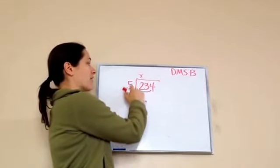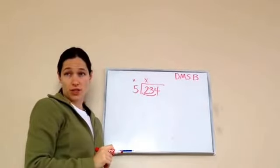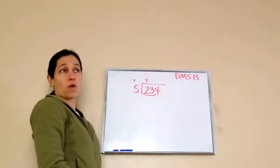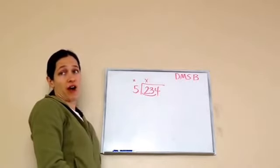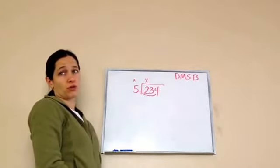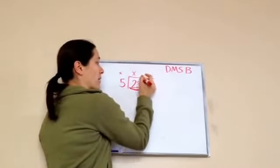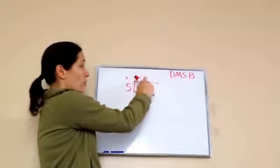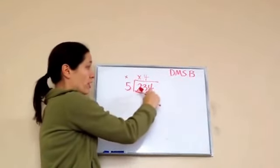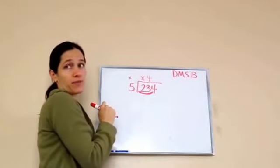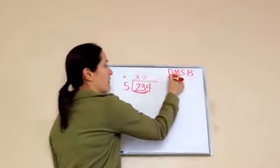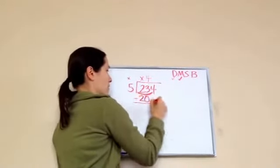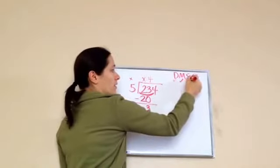So now we're going to say 5 times what equals 23. 5 times 4 would give you 20, and 5 times 5 would give you 25 — so which one should we choose? 4. Because we're working with all of 23, we're going to put the 4 right here above the 3. I don't want to put the 4 above the 2 because we're not just working with the 2 — we're working with 23. That's why I put the X there so I don't accidentally put the 4 in the wrong spot. So we divide it. Now multiply: 5 times 4 is 20. Subtract: 23 take away 20, we get 3 left over. Now bring down.